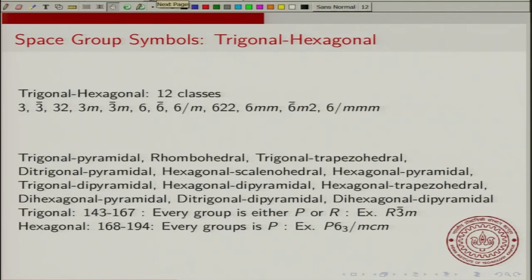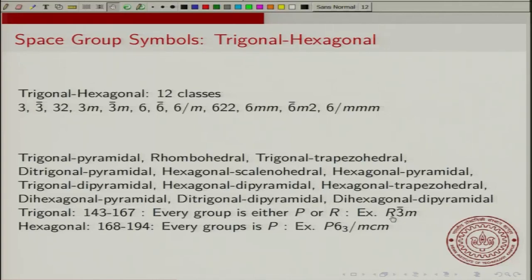Next, we go to the trigonal and hexagonal systems. The trigonal system has 12 point group classes and goes all the way from space group 143 to 167. Every group in the trigonal system is either primitive or R-centered. An example is R3̄M.